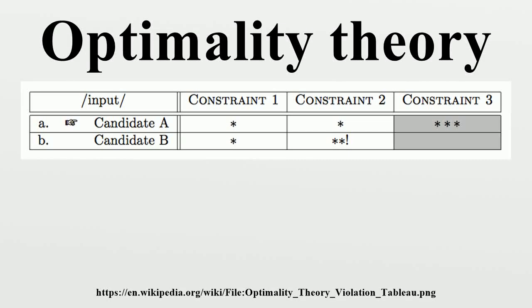Optimality theory is a linguistic model proposing that the observed forms of language arise from the interaction between conflicting constraints. OT differs from other approaches to phonological analysis, such as autosegmental phonology and linear phonology, which typically use rules rather than constraints. OT models grammars as systems that provide mappings from inputs to outputs. Typically, the inputs are conceived of as underlying representations, and the outputs as their surface realizations.